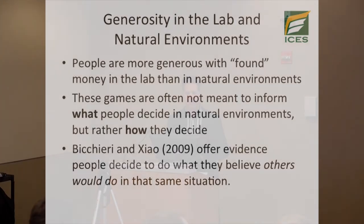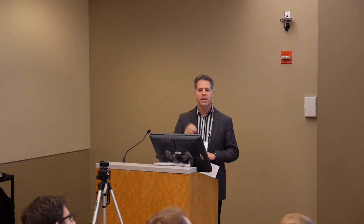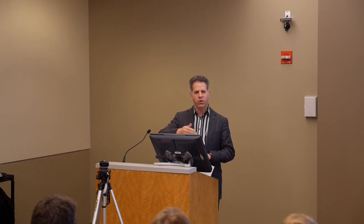In the lab, when people find they have extra money because the experimenter gives them some, they're generous with it — they share with an anonymous stranger. But when people win a lottery, they don't always share with anonymous strangers at the same rate we see in the lab. Is that a cause for concern? Well, these games are often not meant to inform precisely what people decide in natural environments, but rather how they decide. So we're not always looking for parallelism in decisions.